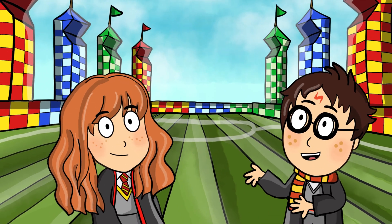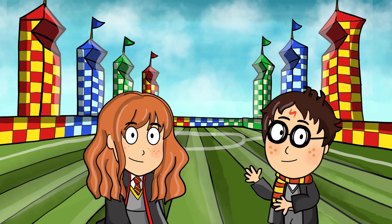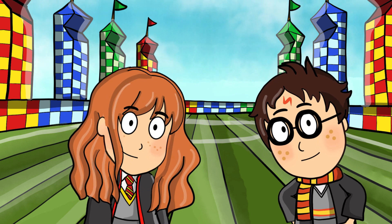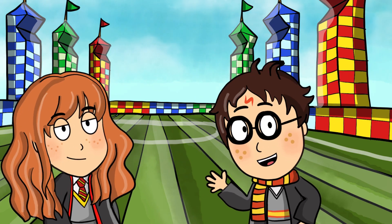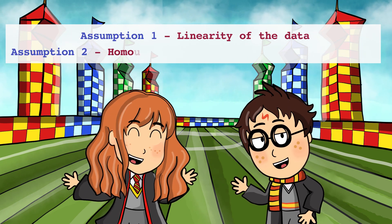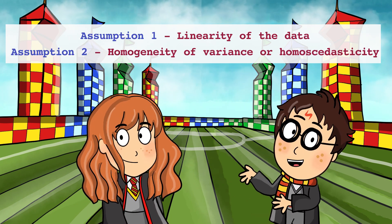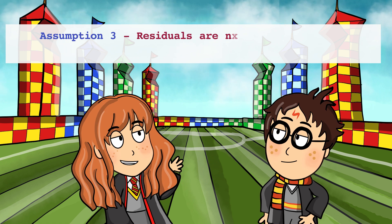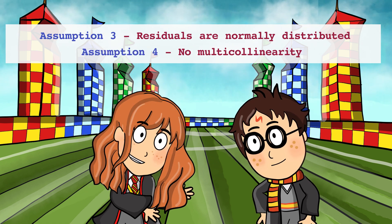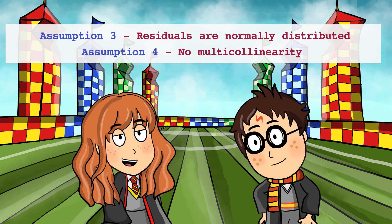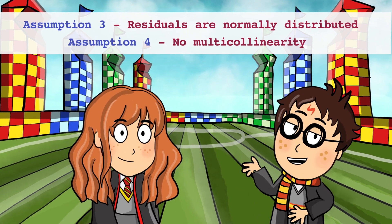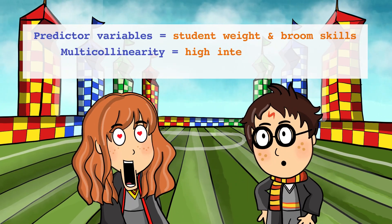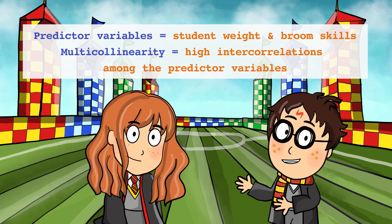We must also not forget to check if the model meets the assumptions of multiple regression. We will talk about the assumptions in detail in another episode, but there are four main assumptions for multiple regression. The first assumption is linearity of the data. The second is homogeneity of variance, or homoscedasticity, as discussed in the Chocolate Frogs episode. The third assumption is that the residuals should be normally distributed. The final assumption is there should be no multicollinearity between predictors. Multicollinearity isn't a problem with one predictor variable, but in this case we have two predictor variables.